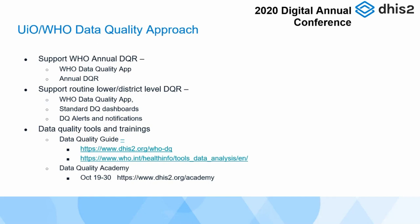The WHO has two standard approaches. They have the WHO annual data quality review, and we have developed in partnership with them the WHO data quality application to help countries through this review process. It will actually produce an annual data quality report automatically for countries based upon the standard WHO format. We've also been working to support more routine lower-level district data quality reviews — Andrew made reference to this with what they do on a monthly basis in Rwanda, the data verification and validation exercises.